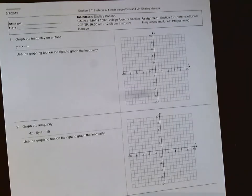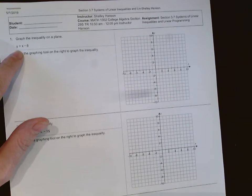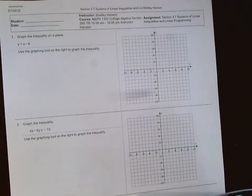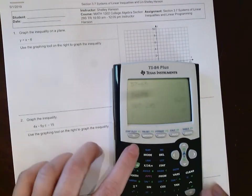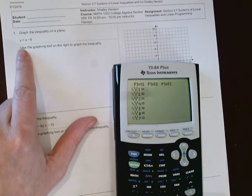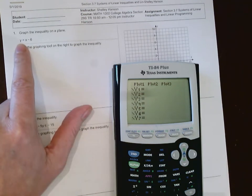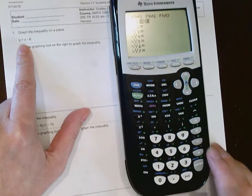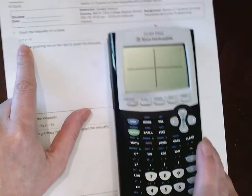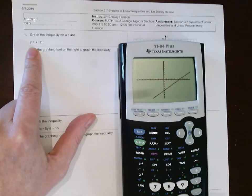Section 3.7 is solving systems of linear inequalities and linear programming. We're graphing inequalities. The first one says y is greater than x minus 6. You need to see where the line is going to be, so go to your y equals. This one is already solved for y, so just type in x minus 6 and graph it — it's going to be a line.